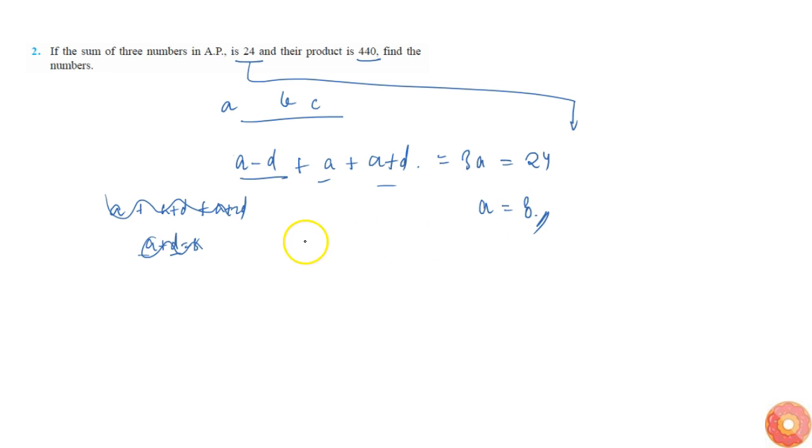And finally the product is given as 440. So product is simply a into a minus d into a plus d, this is equal to 440.